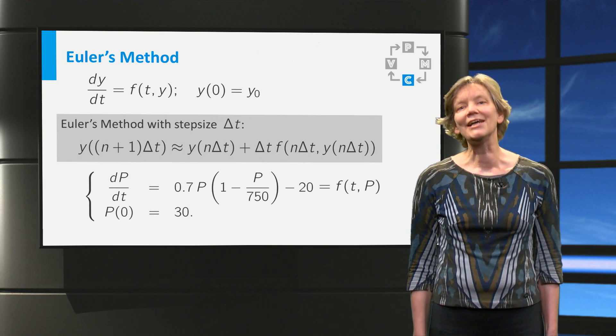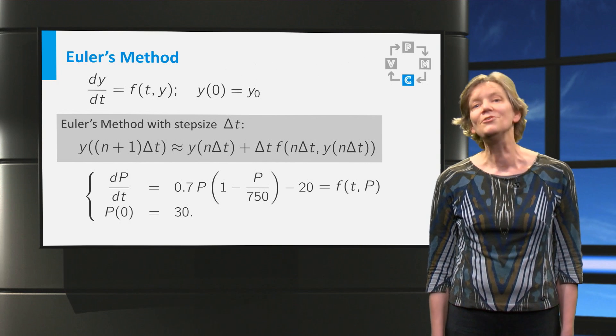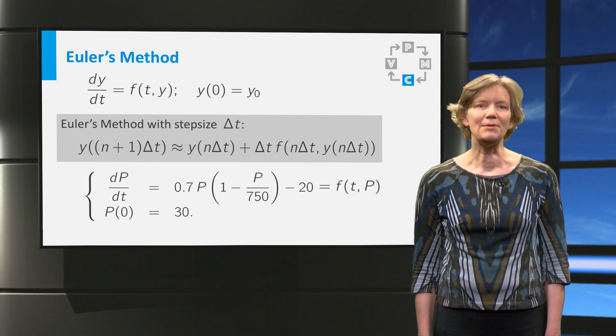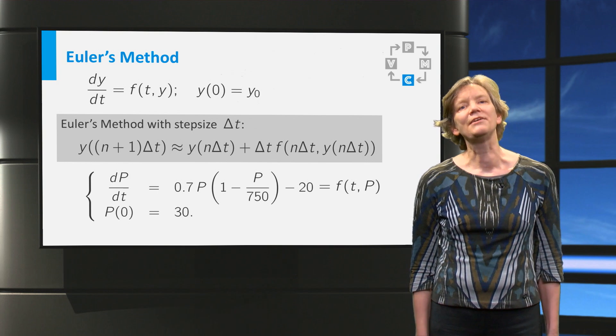When you compare the differential equation for the rainbow fish with the general one, you see that our function f is now a function of t and P and that f equals the right hand side of the differential equation.